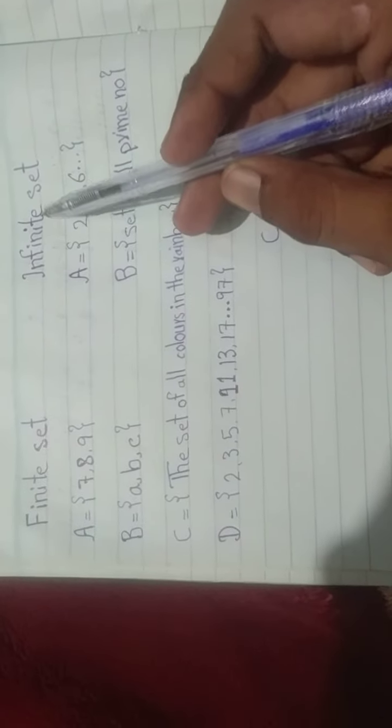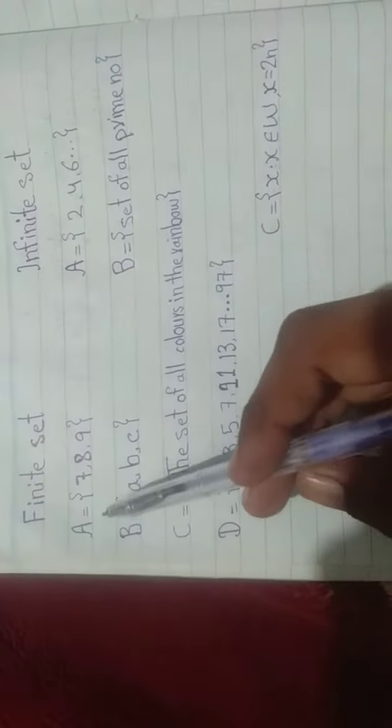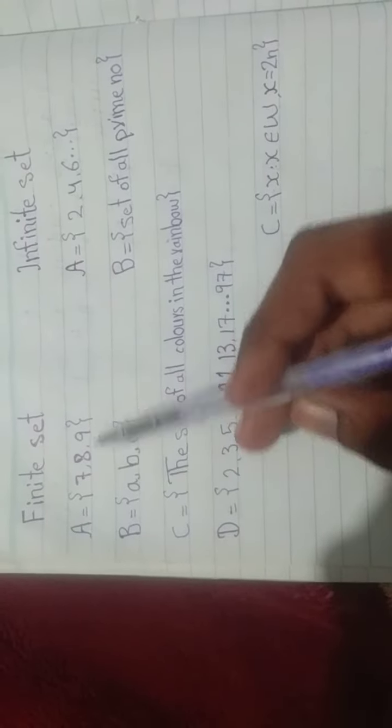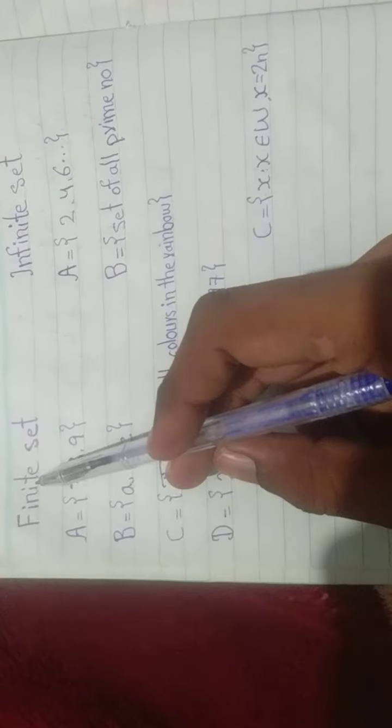If the number of elements in a set is unlimited, it is said to be an infinite set. For example, set A contains {7, 8, 9} - this is a limited set, it is said to be finite.